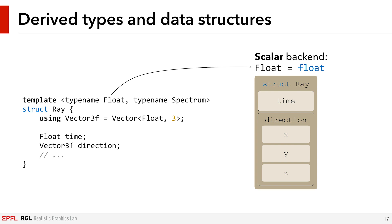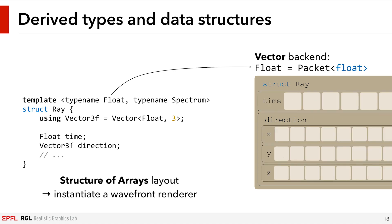If we set the float parameter to be a plain scalar float, this code generates a data structure with one float for the time property, one float for the x-direction, the y-direction, and so on. But if we swap in an Enoki array type like packets, this generates a wide or wavefront version of the data structure, with for example 16 floats for time, 16 floats for x-direction, and so on. This automatically results in a structure-of-arrays layout, which is appropriate for vectorized computations.